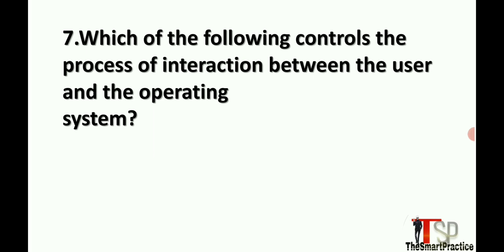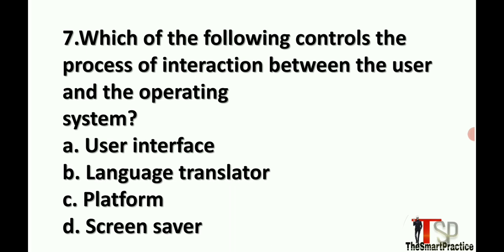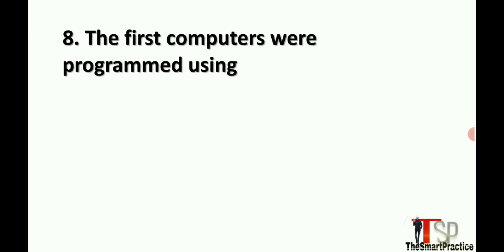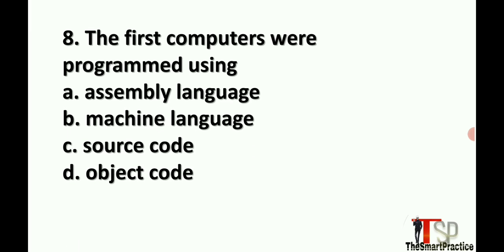Which of the following controls the process of interaction between the user and the operating system? Answer is User Interface. The first computer was programmed using: assembly language, machine language, source code, or object code. Answer is Machine Language.